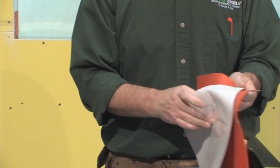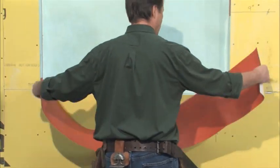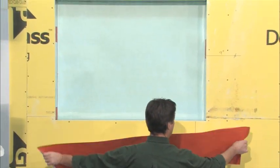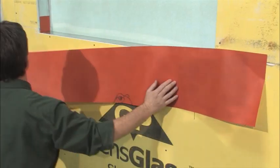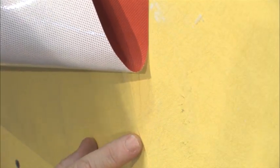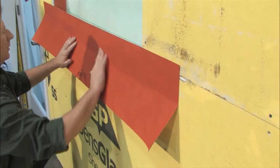Install the sill piece by first removing release paper from the top half of the flashing material and sticking it in place, just under 2 and 3 quarter inches above the rough opening, while leaving 6 inches of release paper on the lower half for shingling over the field membrane. Slit the inside corners and fold the flap into the opening, fully adhering to the inner surface.